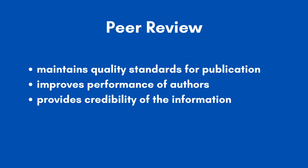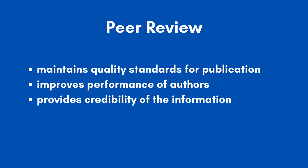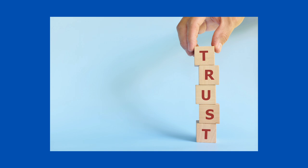In academia, scholarly peer review is often used to determine an academic paper's suitability for publication. Therefore, peer-reviewed or scholarly journal articles should have a level of trust that goes beyond information you might find on a typical website where the information is freely available.